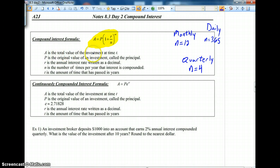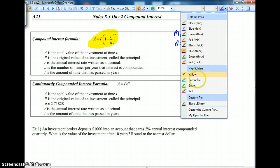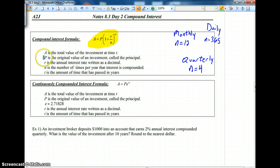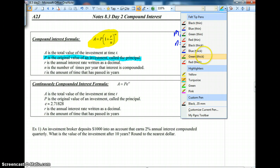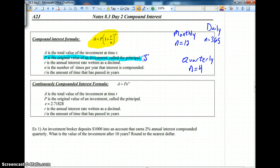A is the total value of the investment at a given time t. It's the amount of money that you're going to have at a certain time. P is the original amount of money, it's called the principal, but it's the amount of money that you open the account with. It's what you start with.